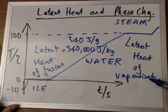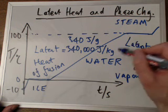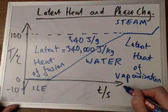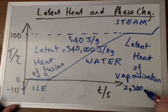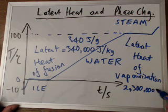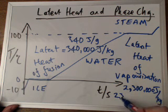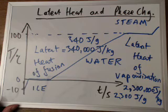And the latent heat of vapourisation, going from water into steam, is a huge value. It is, in fact, 2,300,000 joules per kilogram, or 2,300 joules per gram.